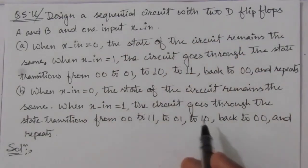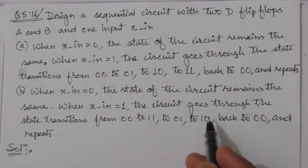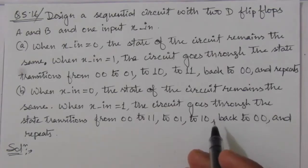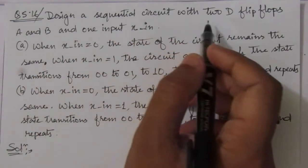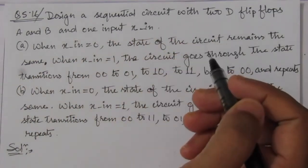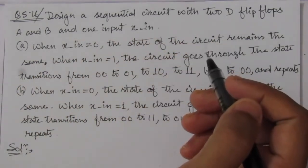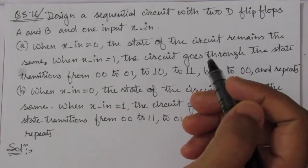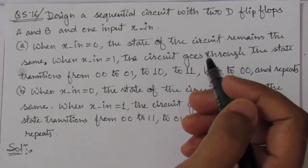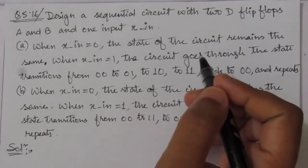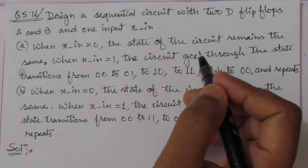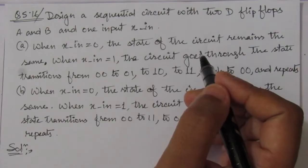Similarly, here also we are given with another similar set of conditions. To design the sequential circuit, first we find out the state table. From the state table, we find out the state equation. And using the state equation, we design the circuit. Let us solve the first part of the problem, Part A.